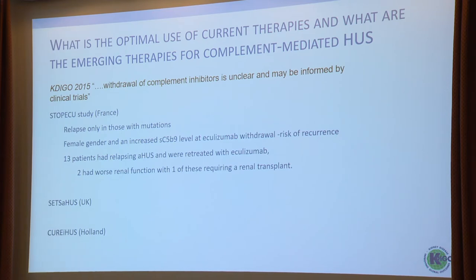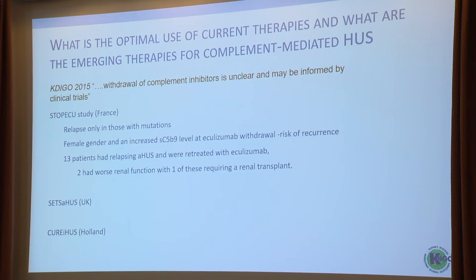In 2015 we said withdrawal of complement inhibitors is unclear and may be informed by clinical trials. There were three prospective trials. The FADDY trial has finished and reported. FADDY found that if you didn't have a mutation, you didn't have a relapse — perhaps unsurprisingly. If you were female with an increased level of C5b-9 at eculizumab withdrawal, you had an increased risk of recurrence. 13 patients relapsed and were retreated with eculizumab; two had worse renal function and one required a renal transplant.